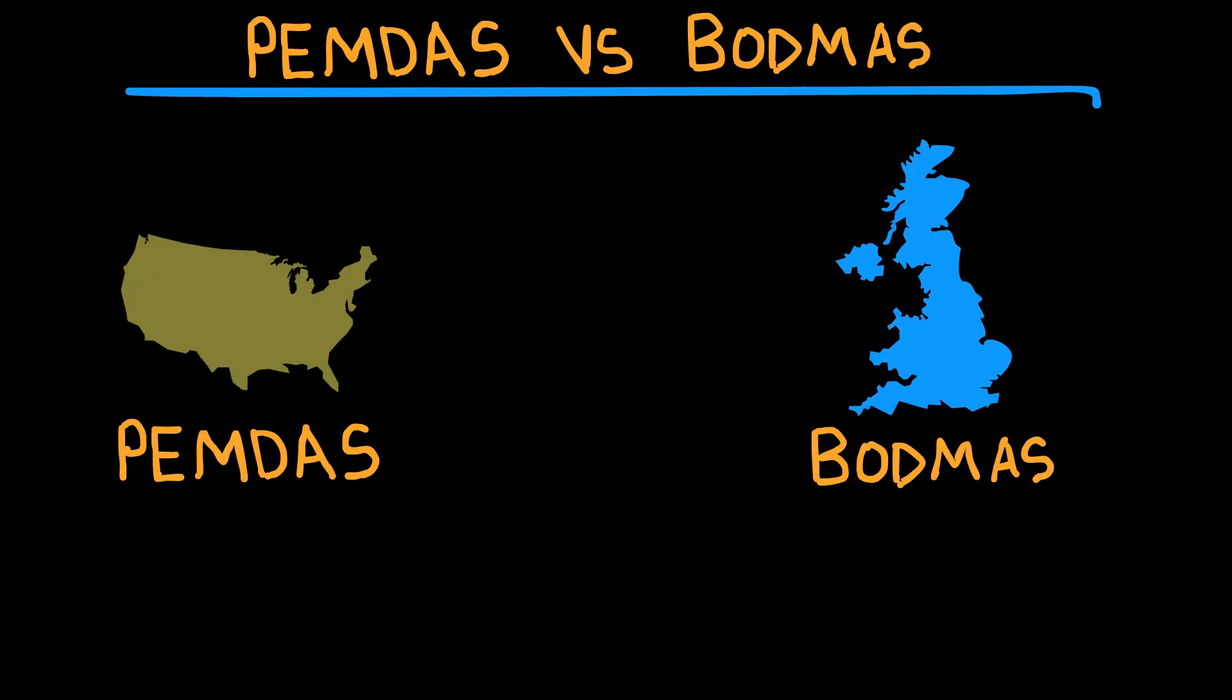Let's talk about the rules. In the U.S., they learn PEMDAS: parentheses, exponents, multiplication and division left to right, addition and subtraction left to right.